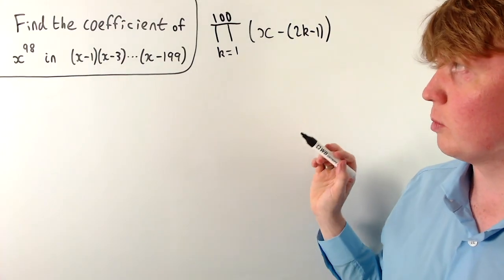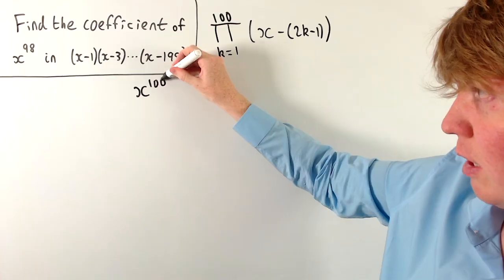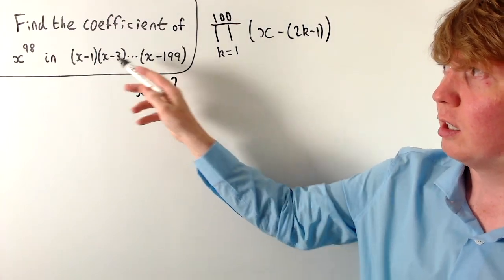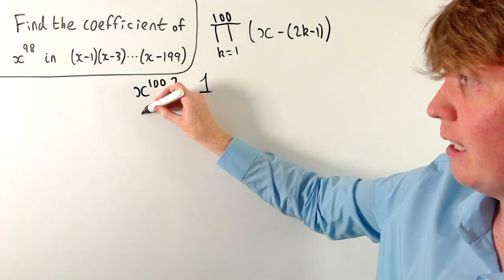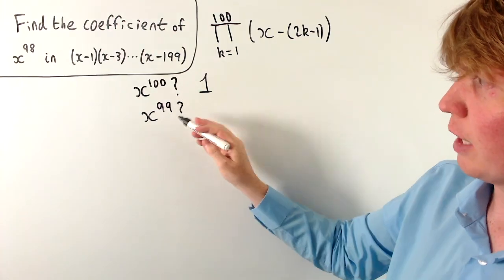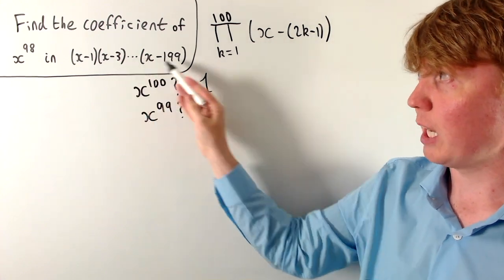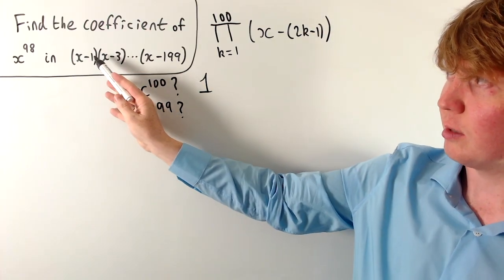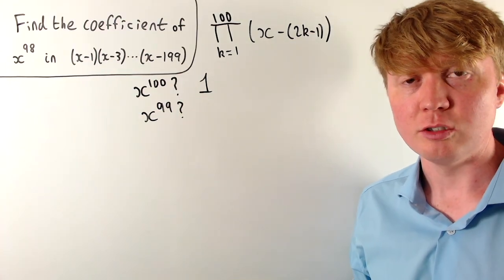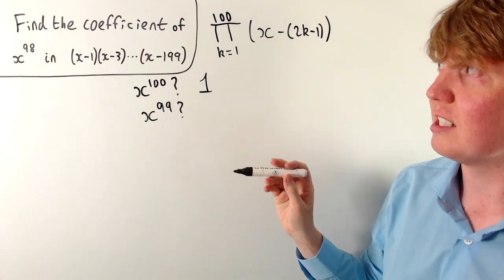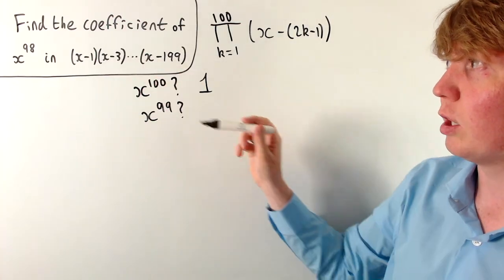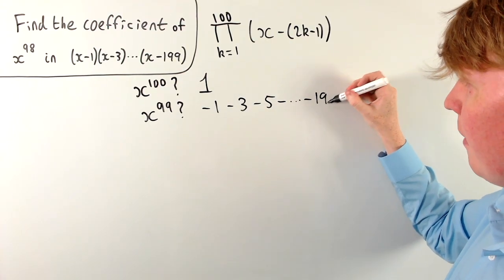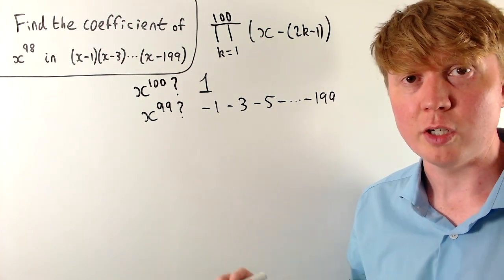To start off, something easier: find the coefficient of x to the power of 100. Expanding by hand, you multiply all 100 x's together, so the coefficient of x^100 is just 1. Similarly, for the coefficient of x^99, you take one of the constant terms and all the others as x. So you could take negative 1 times all the other 99 x's, or negative 3 times the other 99 x's. Adding these gives negative 1, minus 3, minus 5, and so on all the way to minus 199.